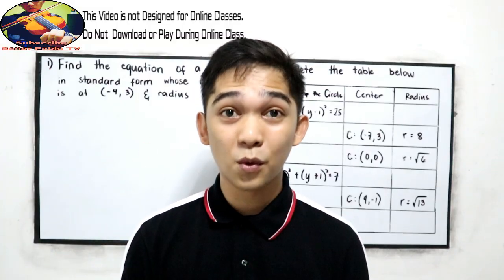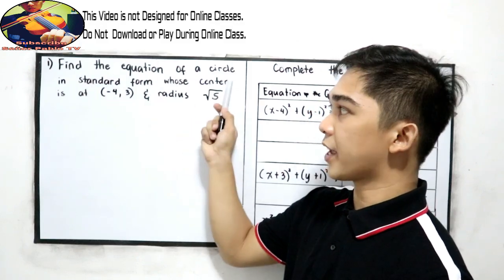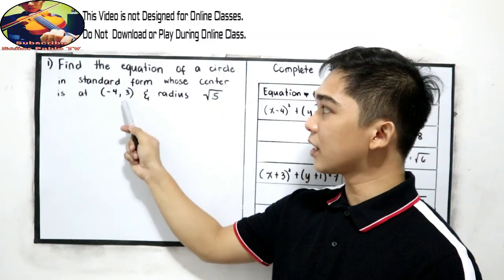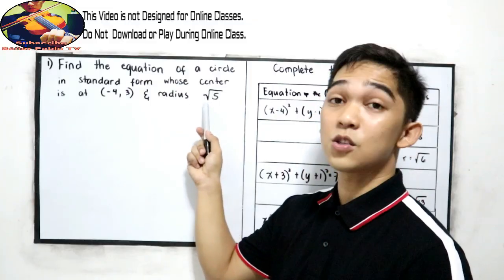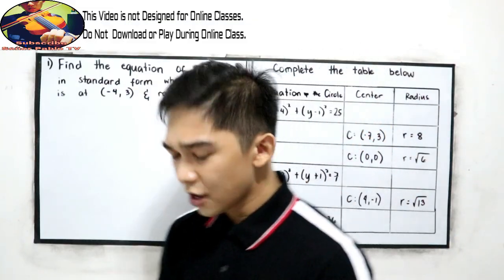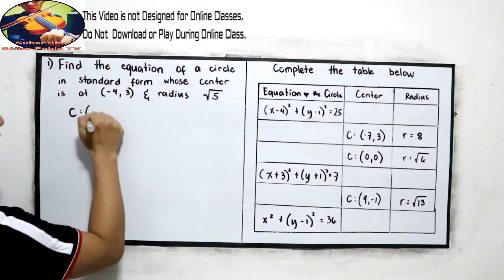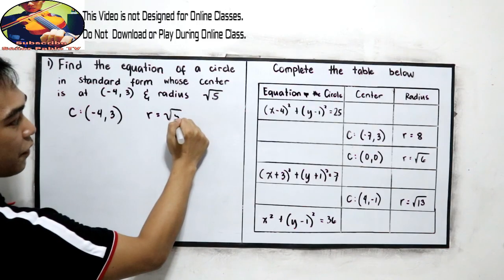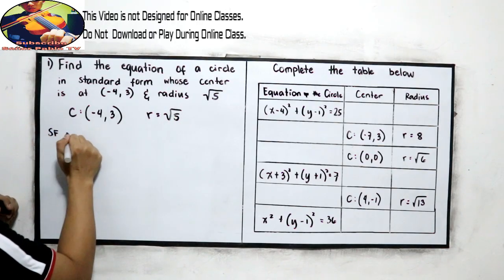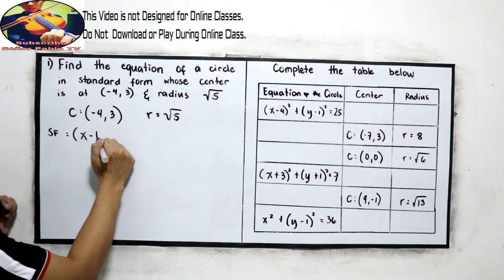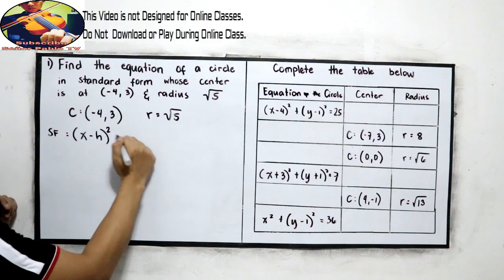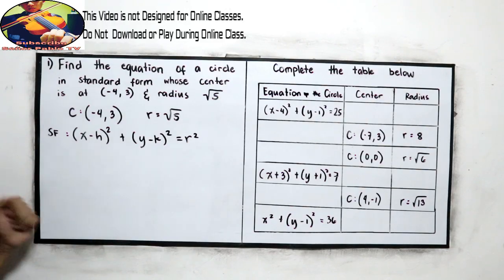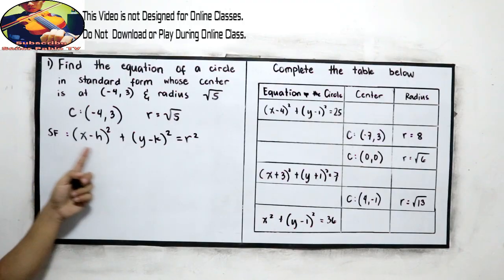Let's have problem number one. Find the equation of a circle in standard form whose center is at negative 4, 3, and radius square root of 5. The standard form of a circle is (x minus h) squared plus (y minus k) squared is equal to r squared. This is the standard form we're going to write into.